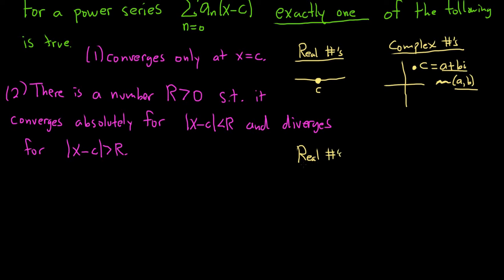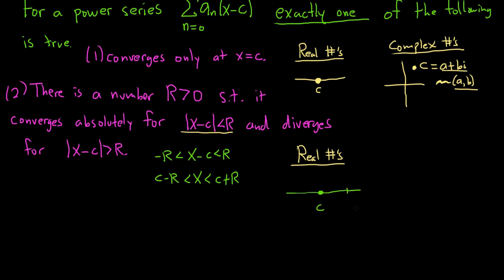For real numbers, if you have the absolute value of x minus c less than R, that means negative R is less than x minus c which is less than R. Adding c to all sides, you get c minus R less than x less than c plus R. So x is in an open interval between c minus R and c plus R. This is called the interval of convergence, and R is going to be called the radius of convergence. So it converges in some open interval centered at c.